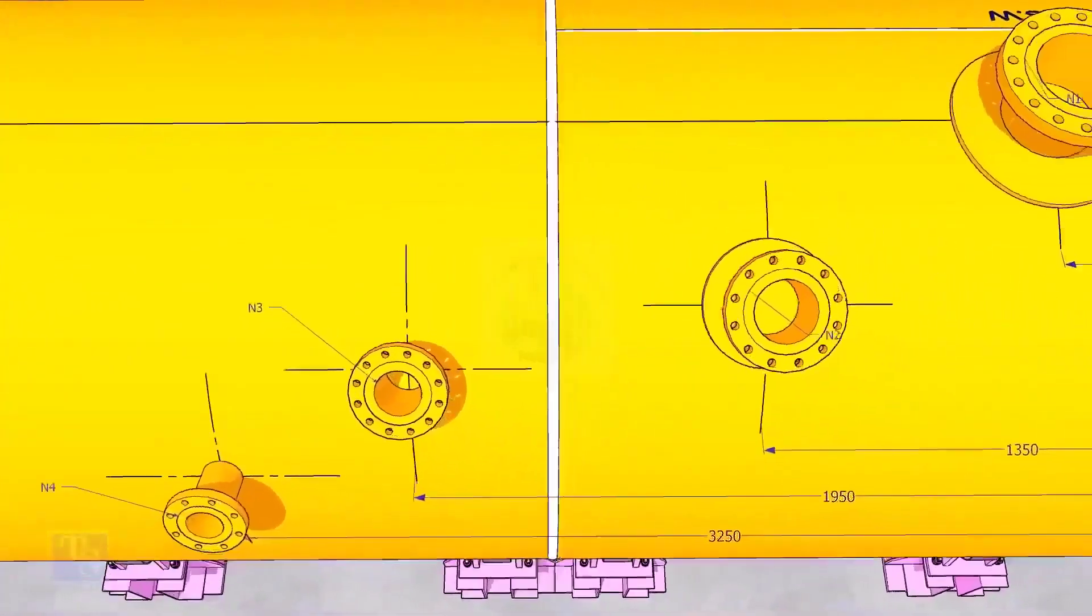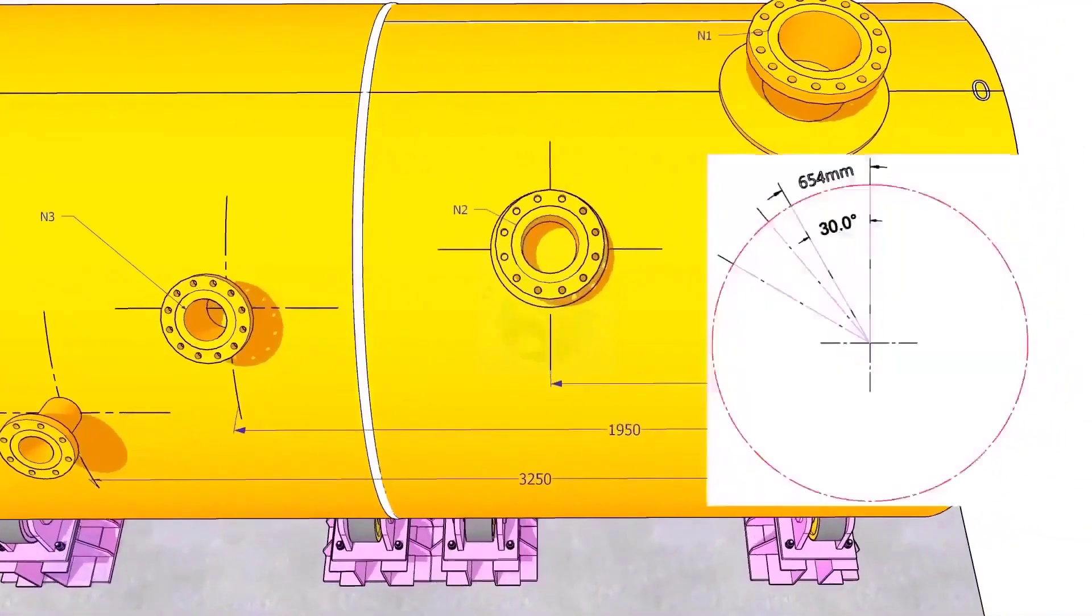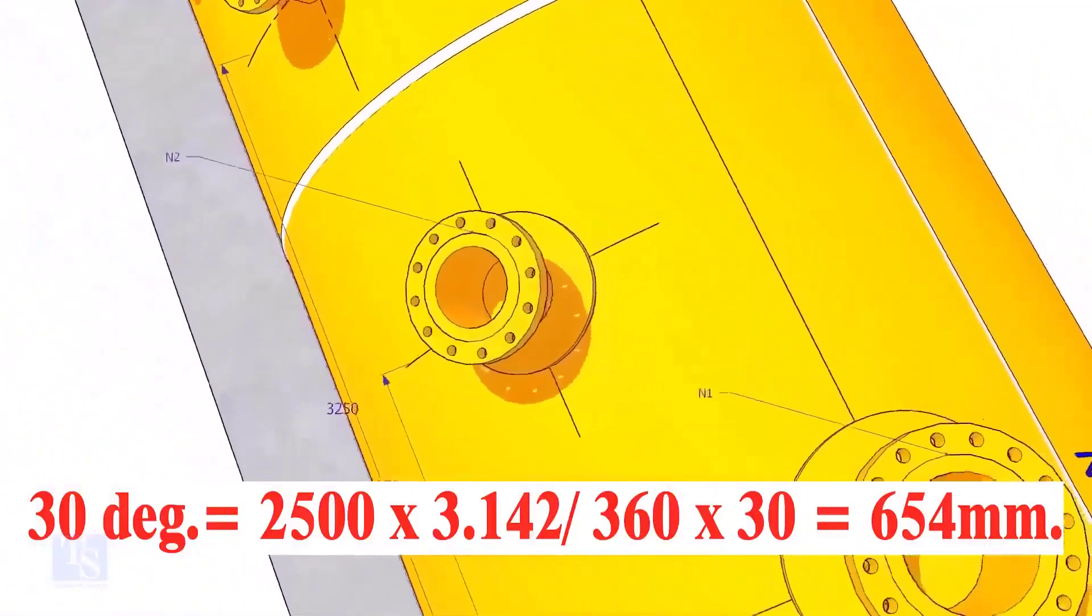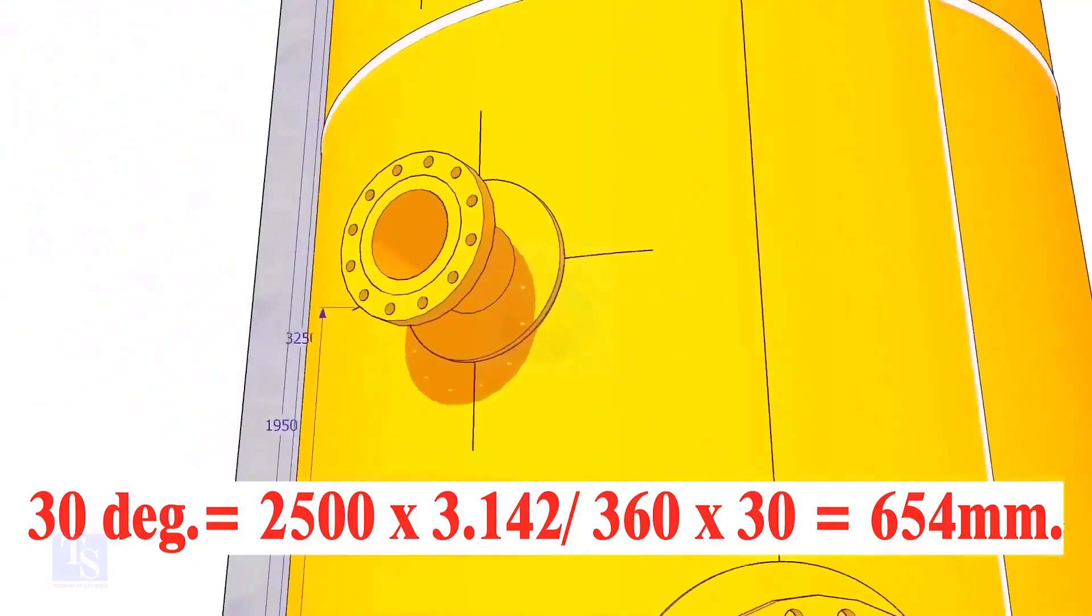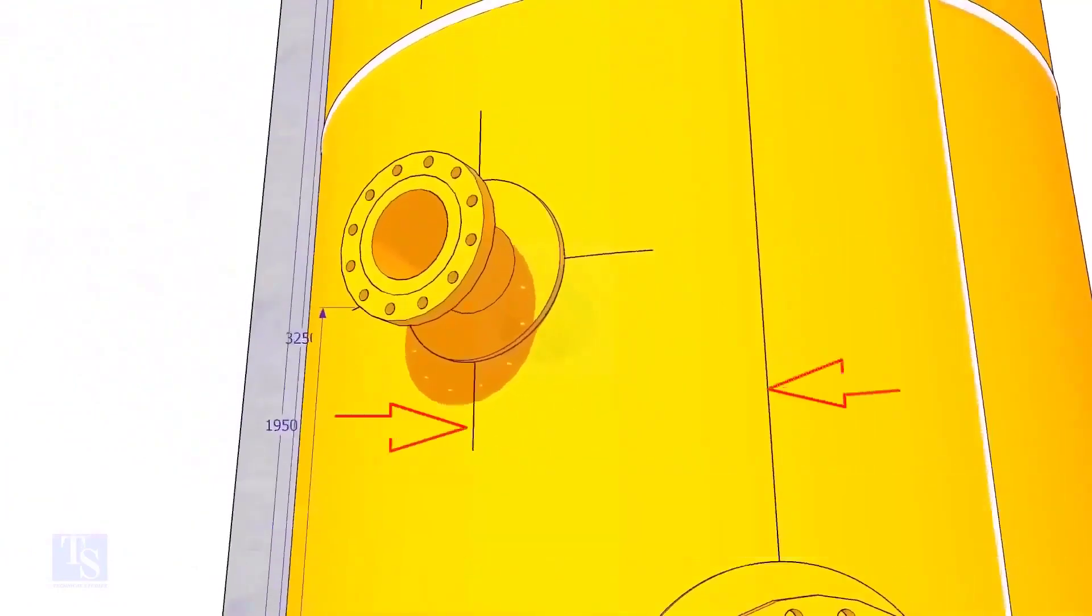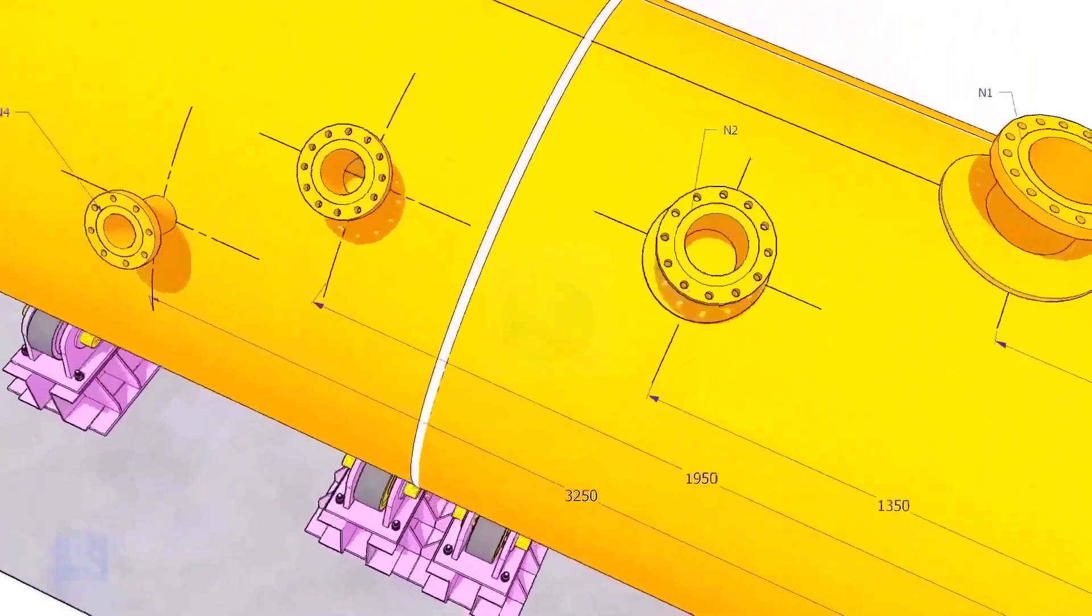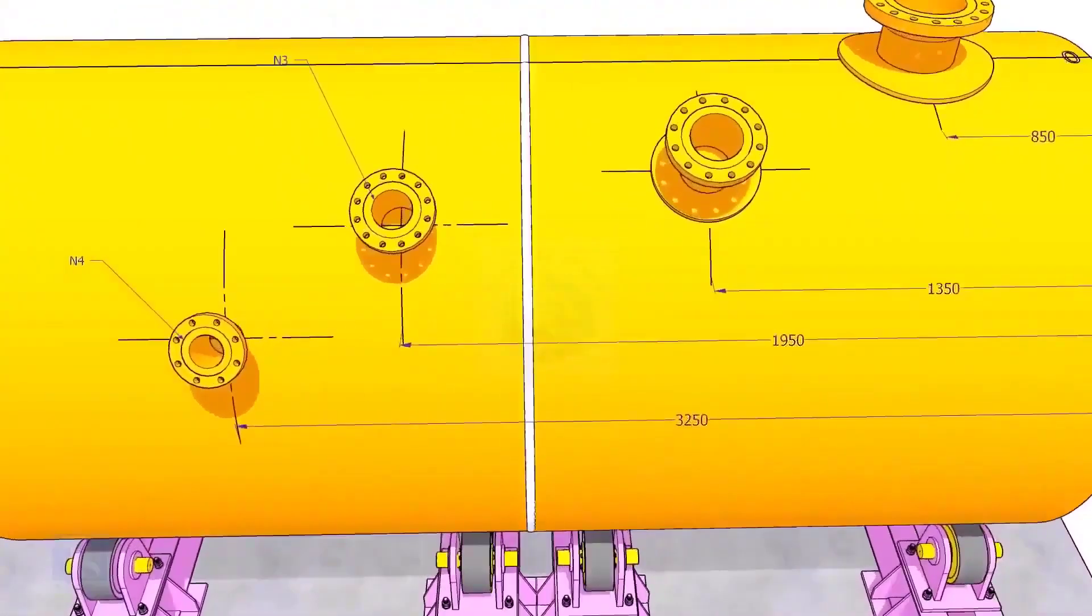Let us mark the center of nozzle N2. It comes on 30 degree anti-clockwise. Convert 30 degree to arc length. Mark this dimension at two locations as shown and draw a line. Draw an arc of 1350 millimeters from the edge of the shell intersecting this line. This point is the center of the nozzle N2.